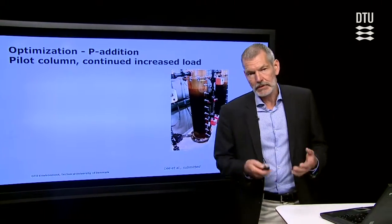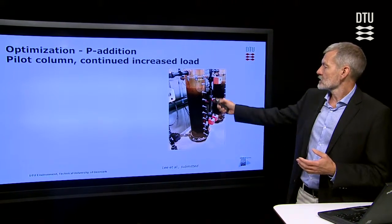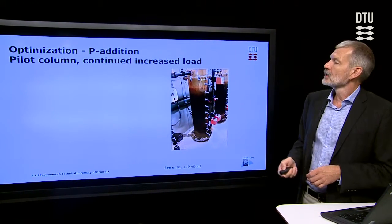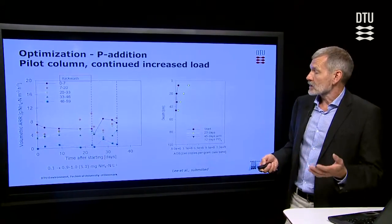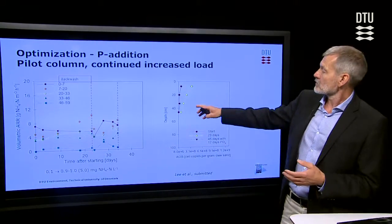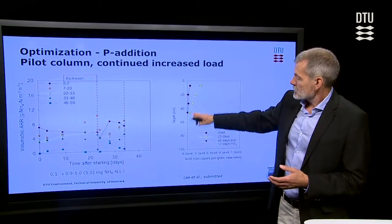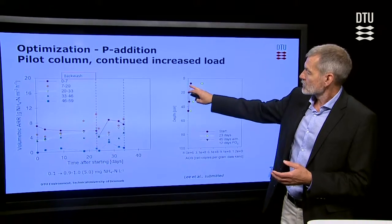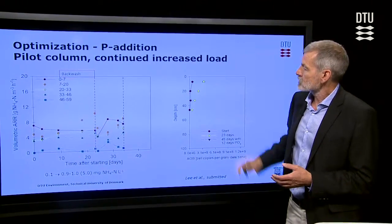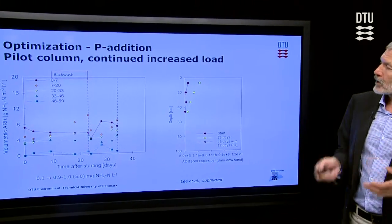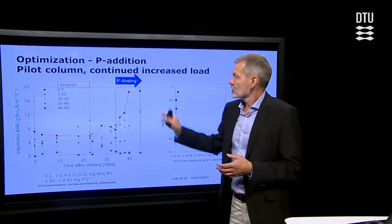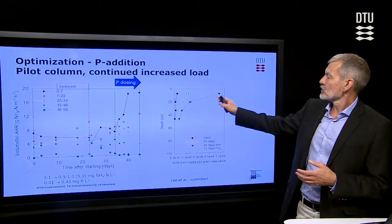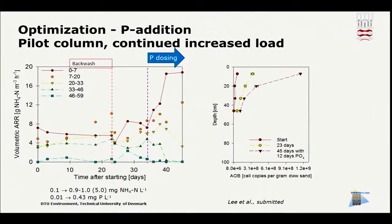What if we tried to stimulate this filter in various other ways? We investigated that in a pilot column. We increased the load for a longer period and could see that the concentration of bacteria — this is again a depth profile — increased from one range to a higher range. But in the moment we added phosphorus, we could see that the rate was really going up, and we got much more bacteria. So adding phosphorus could stimulate the filter.